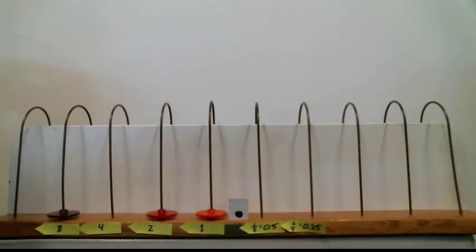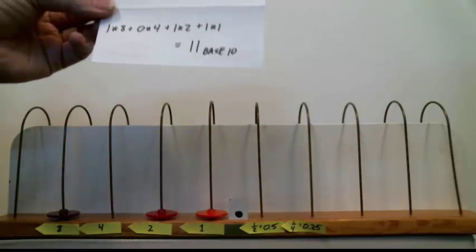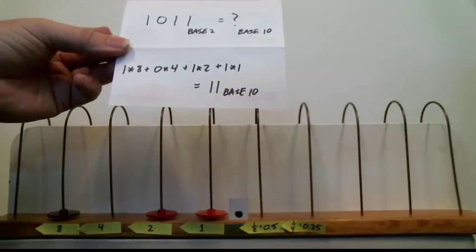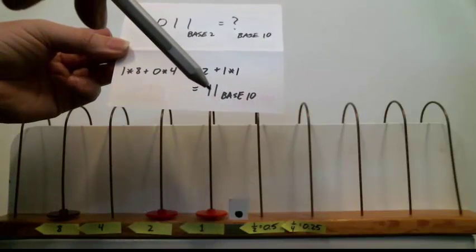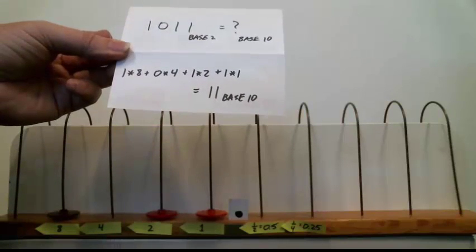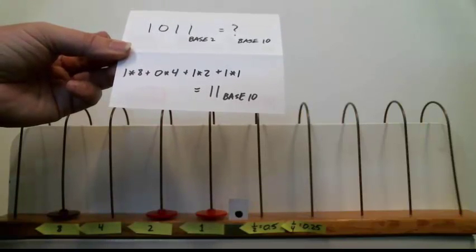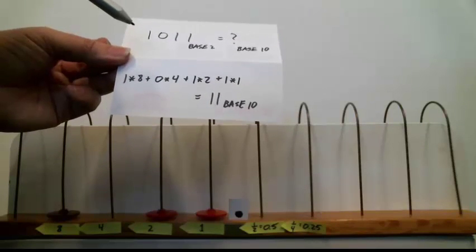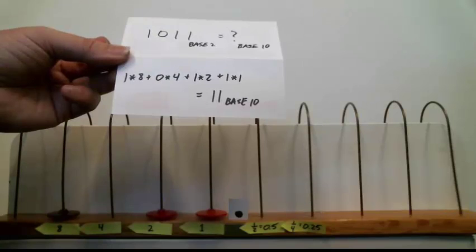So, our base 10 conversion is there. And recognize this is the number 11 in base 10. This is the word we have for that particular configuration of digits. And that's another way of writing the number 1, 0, 1, 1 in base 2.